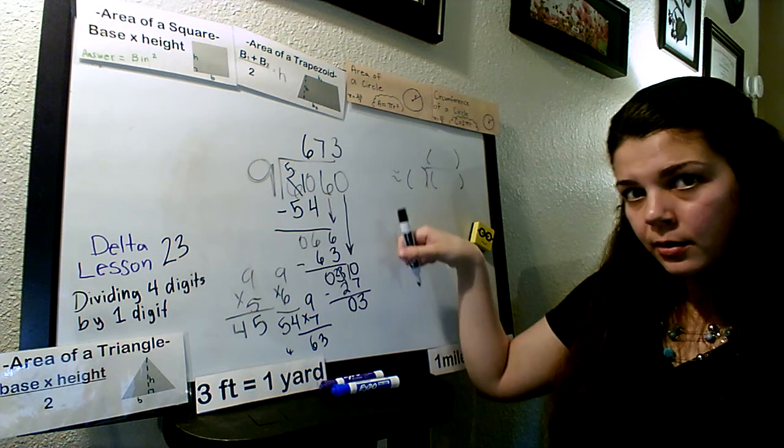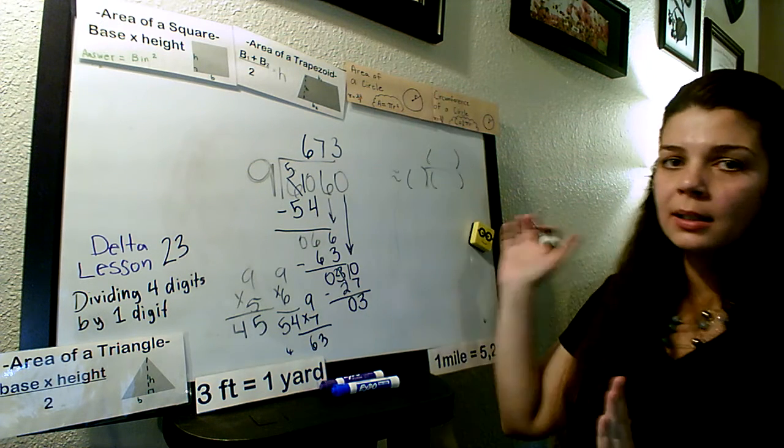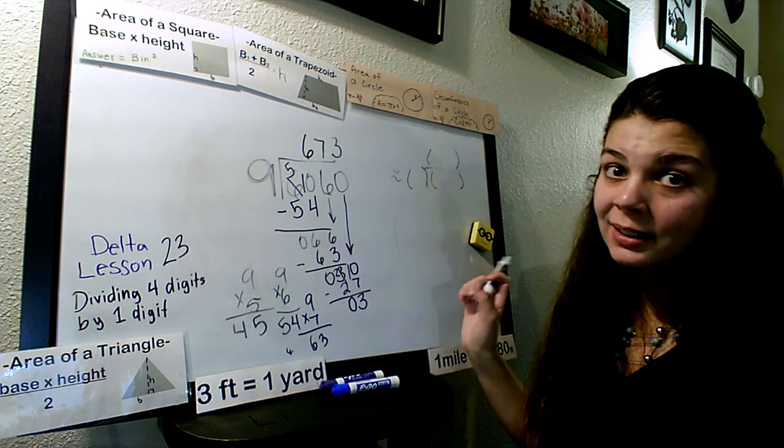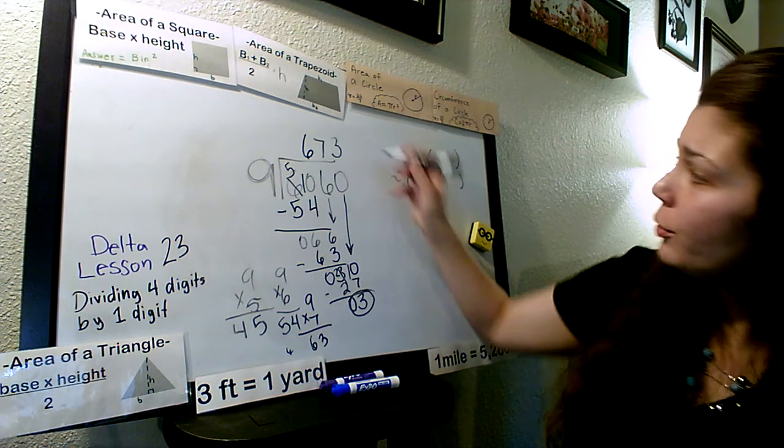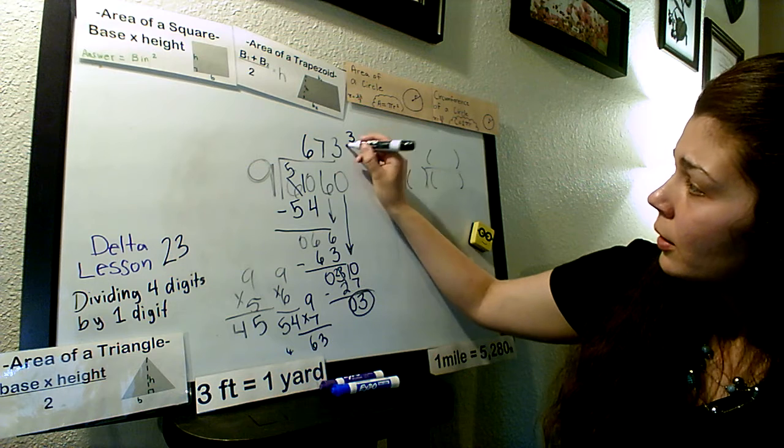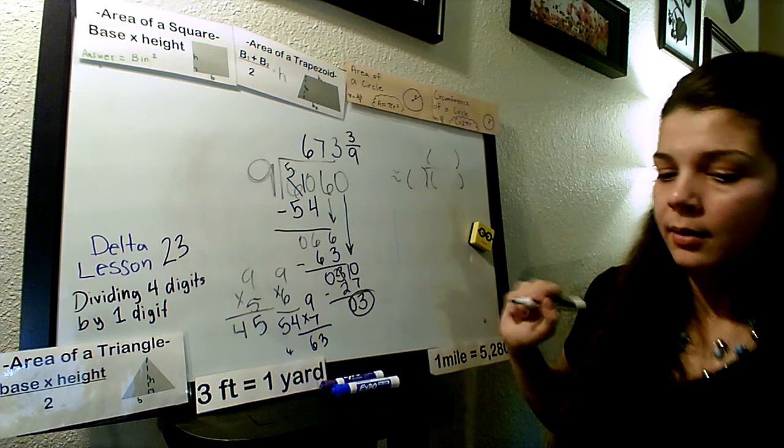Can we bring anything else down? No. Is this how we leave our answer? 673? No. What's missing? Our remainder. Our remainder. We cannot forget about our little friend. Our little friend of the remainder.